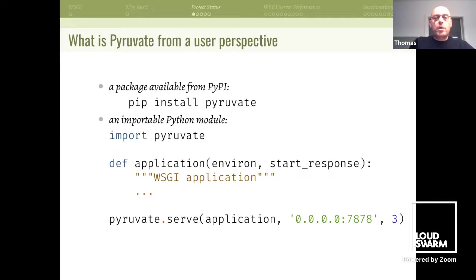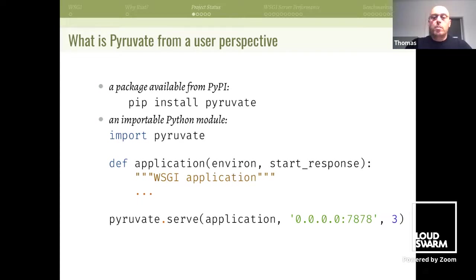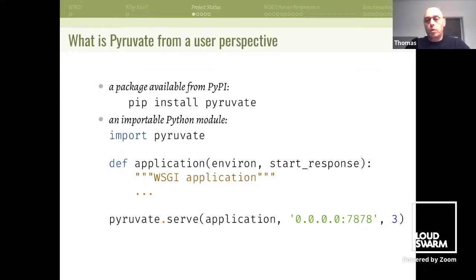So what is Pyruvate from a user perspective? It's a package available from PyPI, so to use it you would pip install Pyruvate. It's an importable module — you import it, you have your WSGI application, and it basically consists of one function named serve. You pass in the application as a parameter, the socket you want to use, and the number of worker threads, and that's it — you have a running WSGI server.